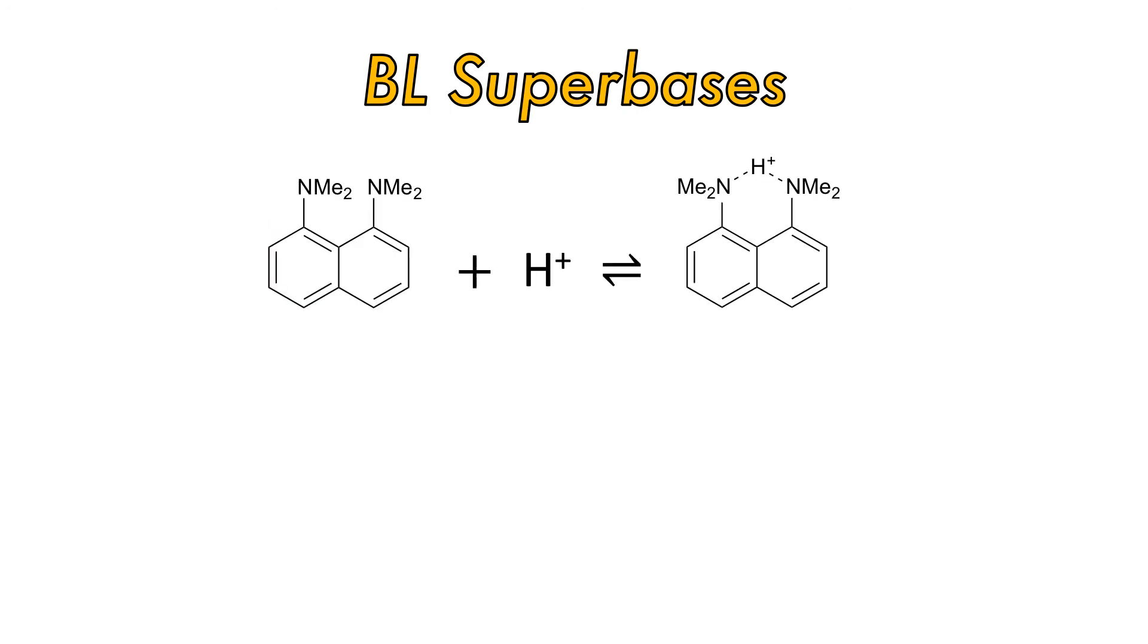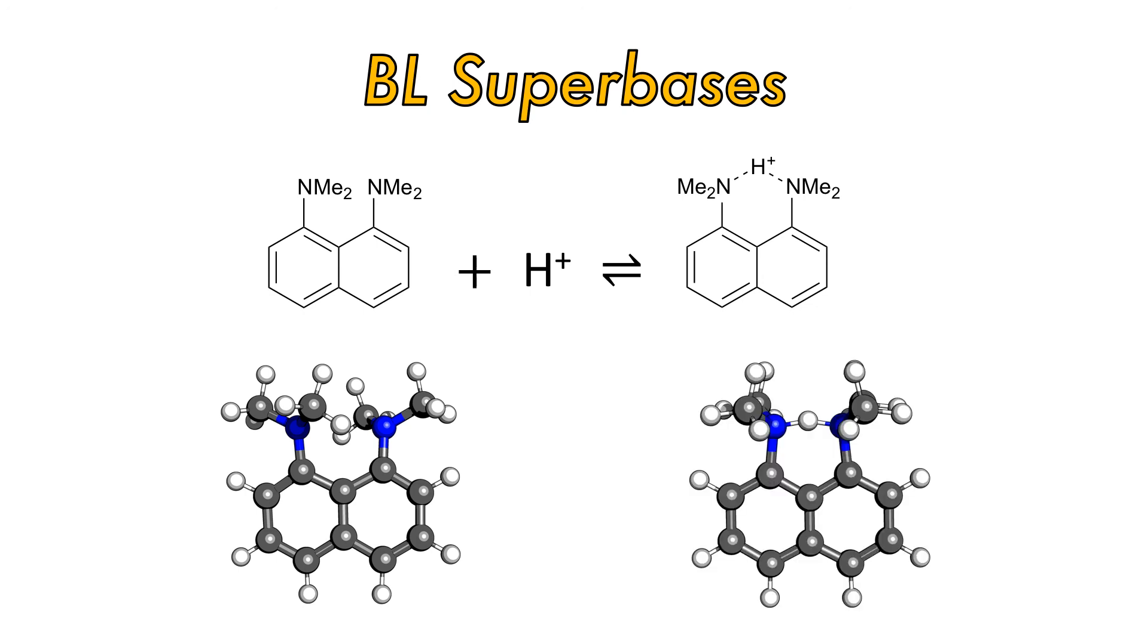The strong basicity of the proton sponge is thought to arise from two factors. Relief of steric hindrance of two dimethylamino substituents in close proximity. If the dimethylamino groups rotate to reduce the lone pair-lone pair repulsion, the methyl groups are brought close together. And secondly, the formation of a strong intramolecular hydrogen bond upon protonation.